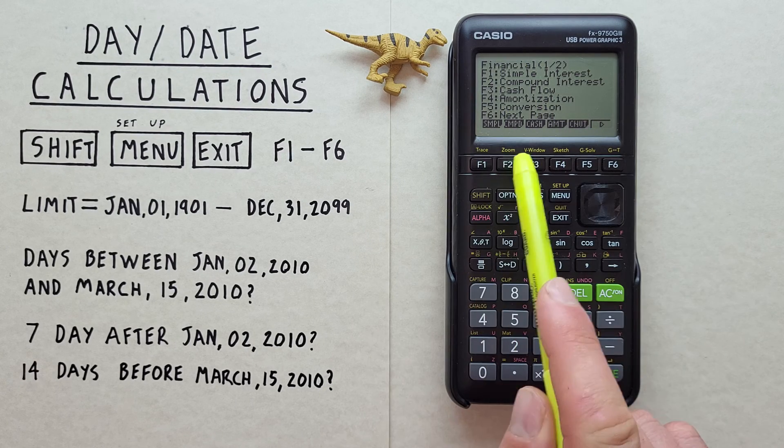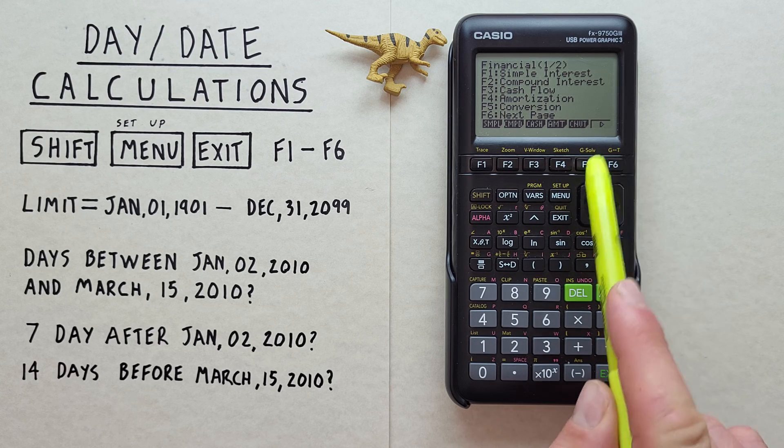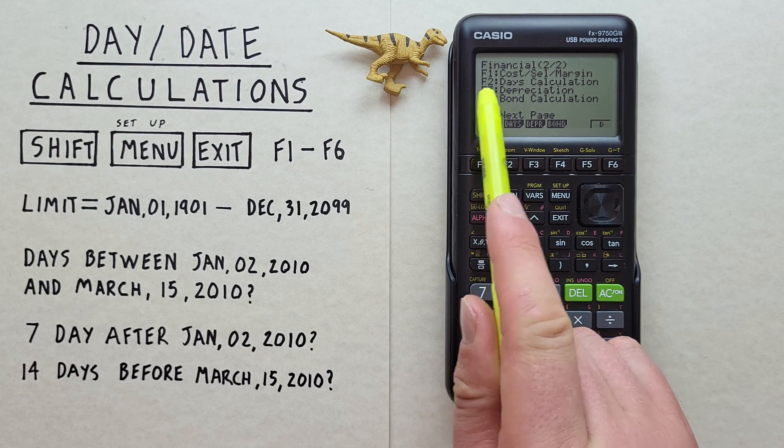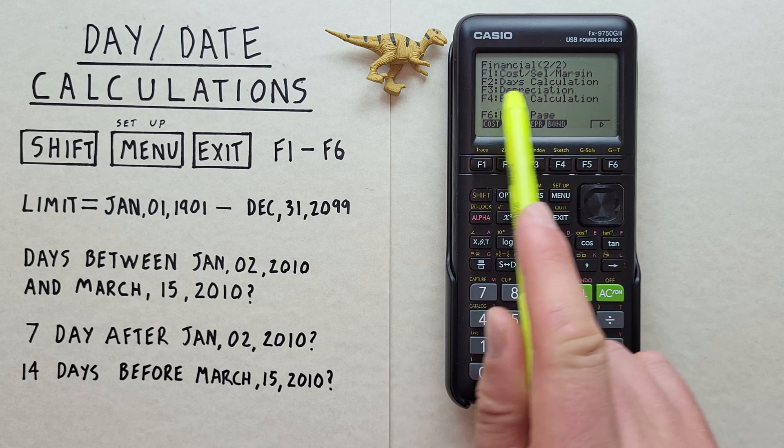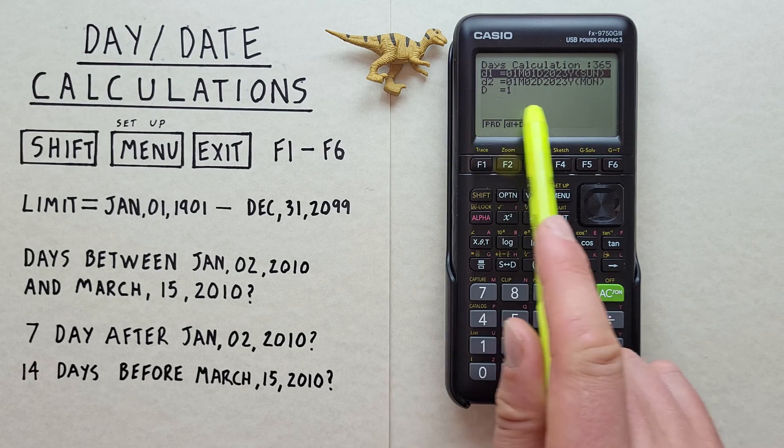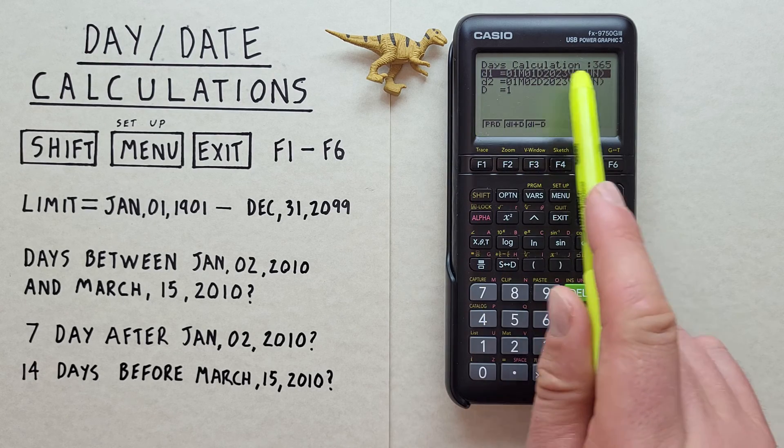Now we see this menu here and we want to scroll one to the right so we hit F6. And at F2 we see days calculation. That's what we want. So we press F2 again. And there we go. We're in the day calculation app.